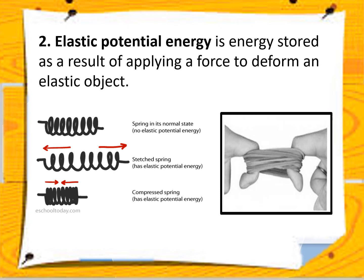The second form of potential energy is elastic potential energy. It is the energy stored as a result of applying force to deform an elastic object. The best and most common example is a rubber band. Another example is a spring. A spring in its normal state has no elastic potential energy. However, if the spring is stretched or compressed, it has elastic potential energy. This same idea is applied to a rubber band.